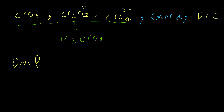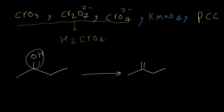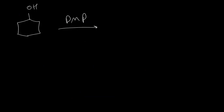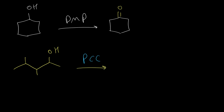When we have a secondary alcohol reacting with any of these oxidizing agents, our answer is always the same — we convert the single bond with oxygen to a double bond, and the product will be a ketone. For example, using chromium oxide or potassium permanganate gives the same ketone product. Here is another example: reaction of secondary alcohol with DMP gives a ketone. Here is another reaction with PCC, converting the alcohol functional group to a ketone.